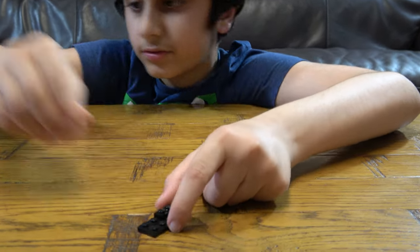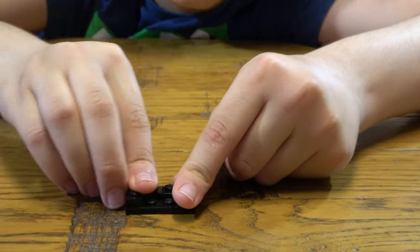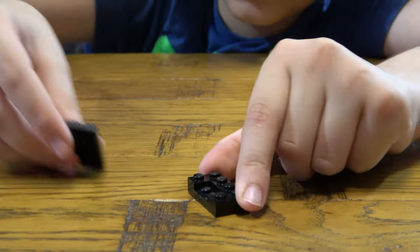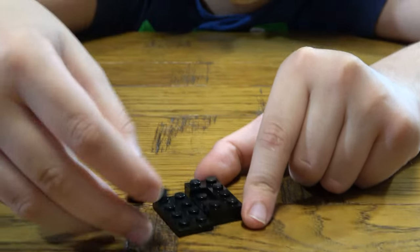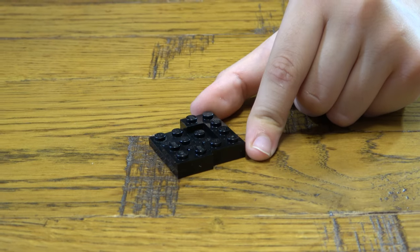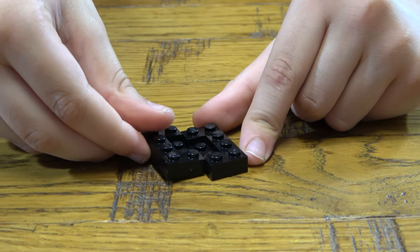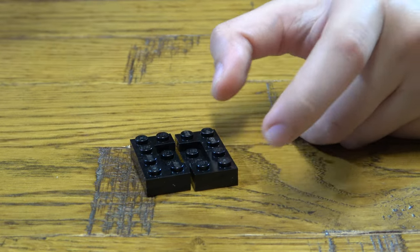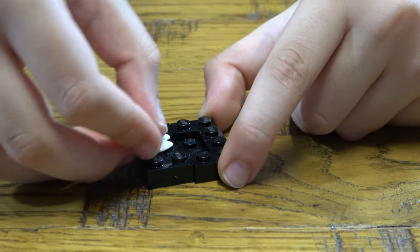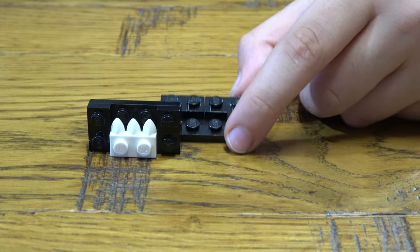Place two of these on each side like so, like this. Then you place two of these white teeth pieces on each side.